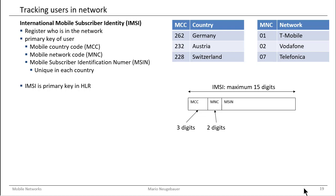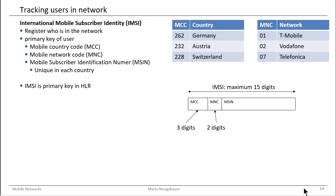How do we identify the users? We have basically one main primary key for a user — it's the IMSI, the International Mobile Subscriber ID, and this IMSI consists of three parts.